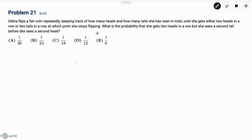This problem reads: Deborah flips a fair coin repeatedly, keeping track of how many heads and how many tails she has seen in total, until she gets either two heads in a row or two tails in a row, at which point she stops flipping. What is the probability that she gets two heads in a row, but she sees a second tail before she sees a second head?